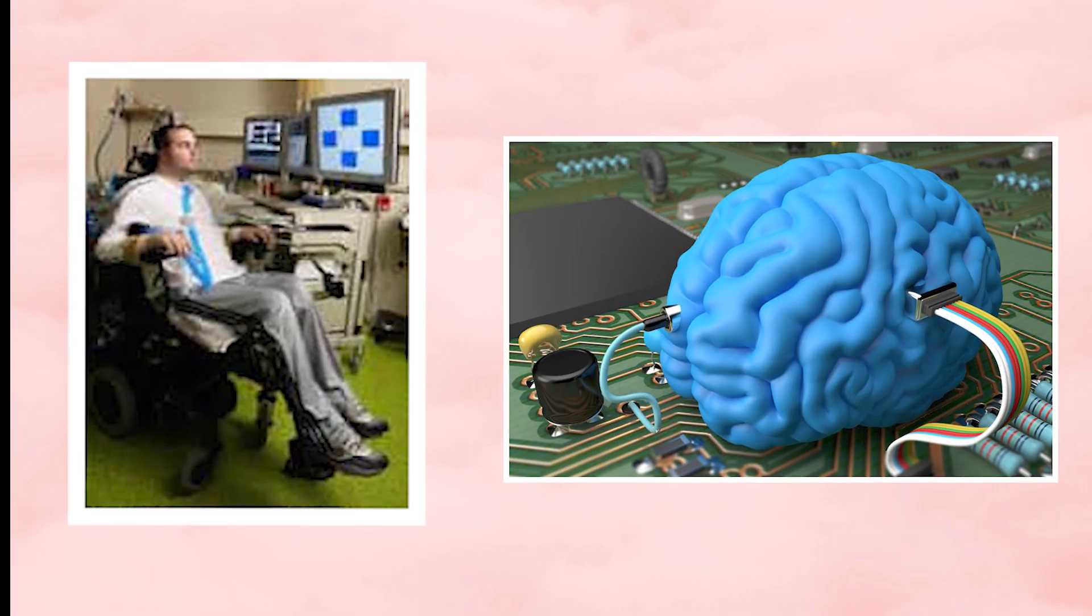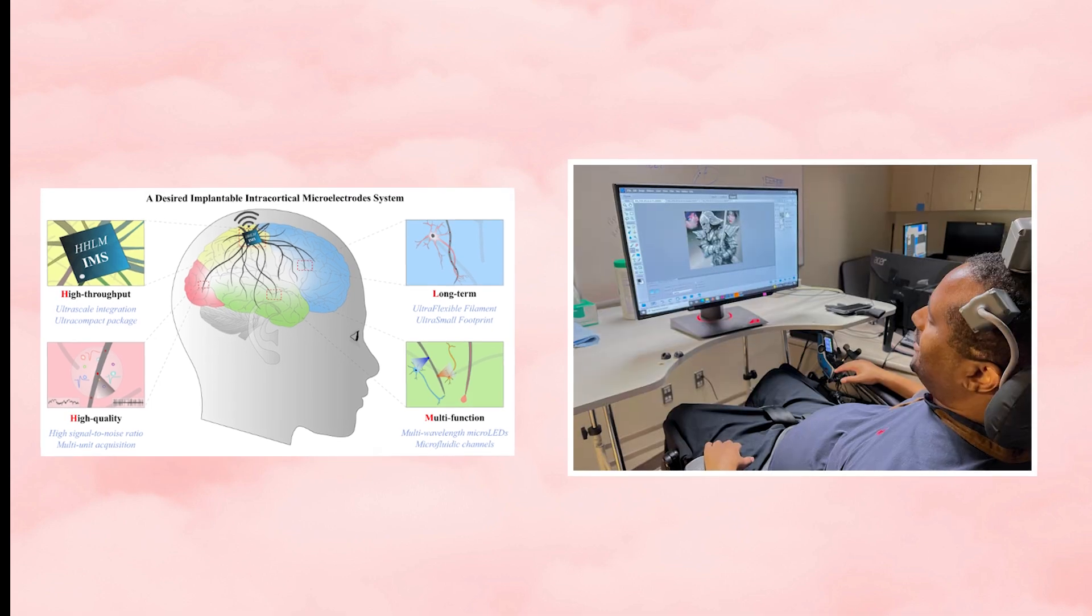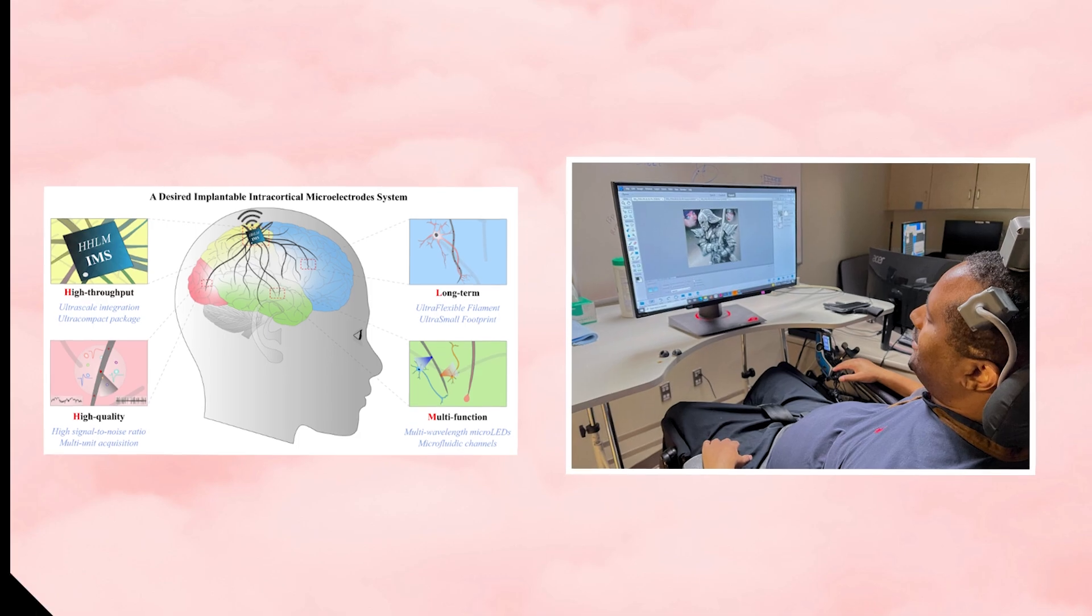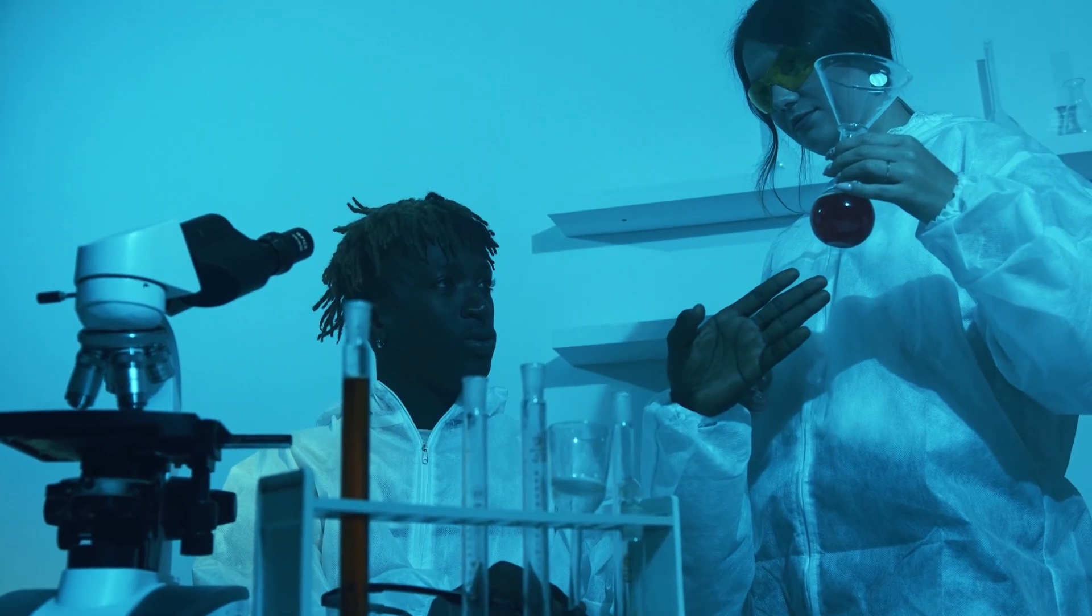BrainGate is a notable research project with the objective of advancing brain-computer interface technologies. This project involves the implantation of microelectrode arrays into the brain, enabling individuals with paralysis to control external devices using their thoughts. Positive results from clinical trials have been reported.